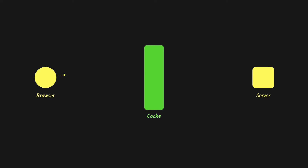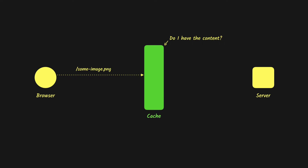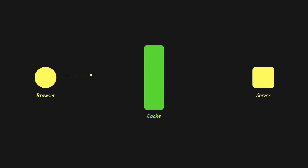When a request comes in for a resource it will be checked in the cache. If it is not found in the cache then the request will be sent to the server, the response will be fetched from there and then it will be cached. In the future when the same resource is requested again there will be no more calls to the server — the item will be found in the cache and returned from there.